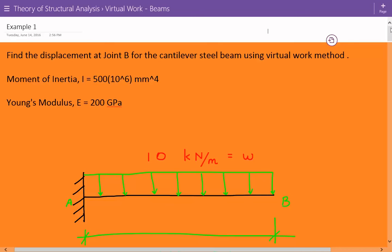Hey everybody, this is example number one for structural analysis of deflections for beams using the virtual work method. The problem statement is we're asked to find the displacement at joint B for the cantilever steel beam using the virtual work method.